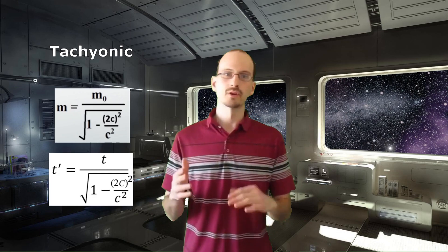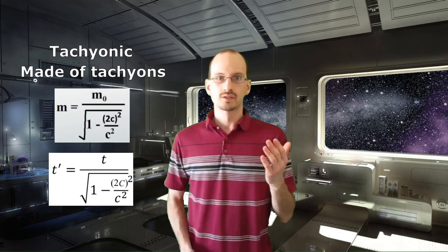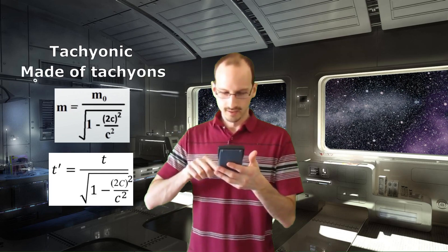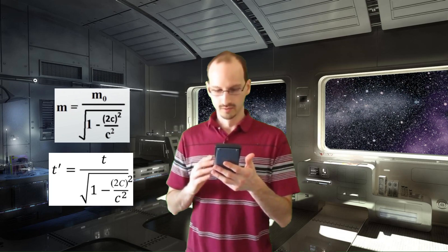So how do we do it? There's nothing stopping us from taking the special relativity equations and plugging in faster than light velocities. We would describe objects traveling at these speeds as tachyonic and the particles they're made of as tachyons. So let's do that, and oh, we get a square root of a negative number.